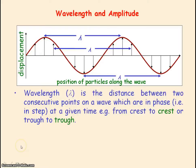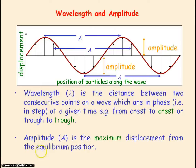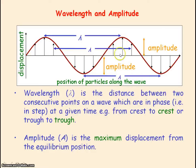Another characteristic of a wave is its amplitude, given by the symbol A. This represents the maximum displacement of the particle from its equilibrium position — so it is the height of the peak from the equilibrium position.